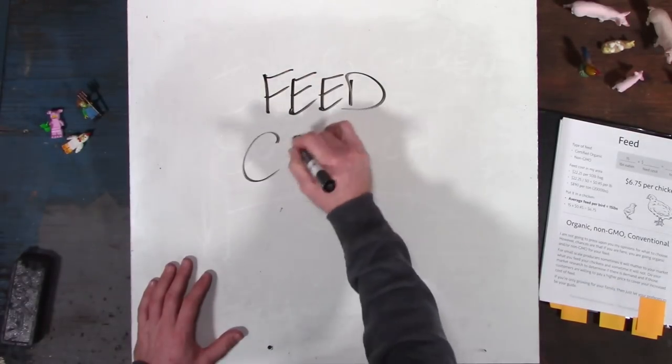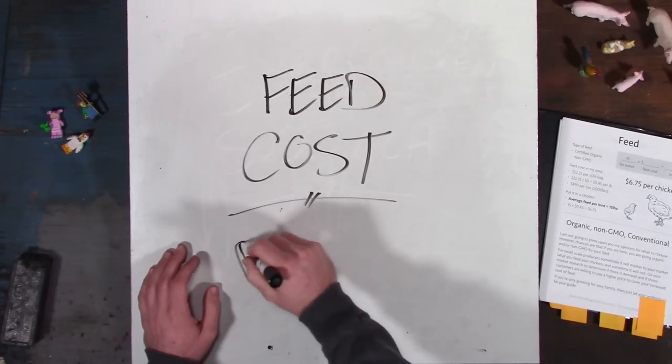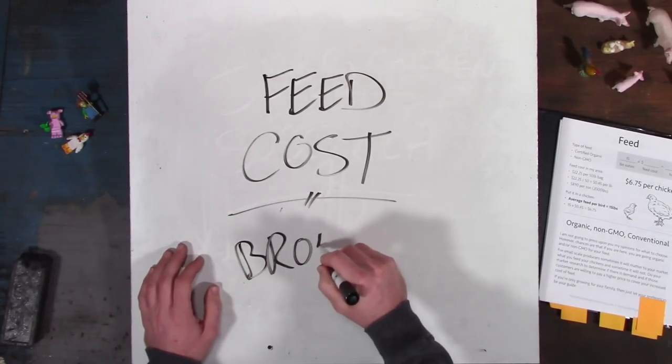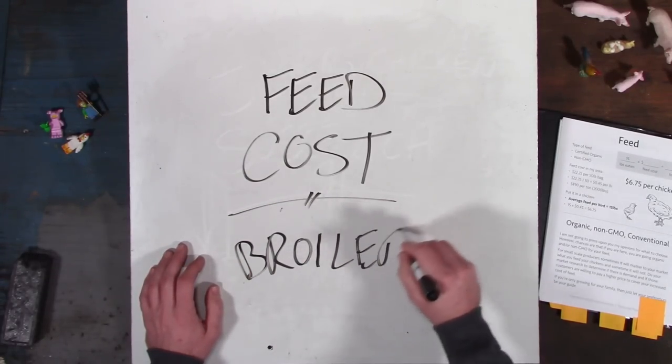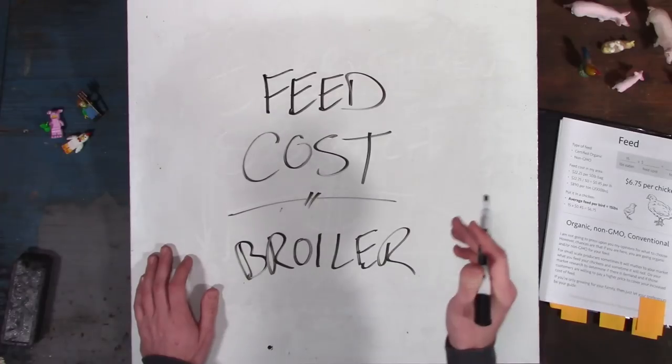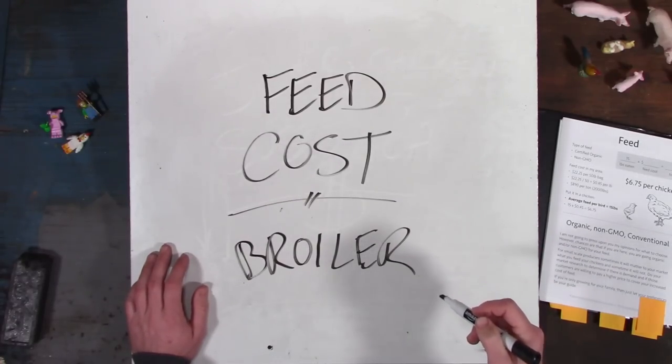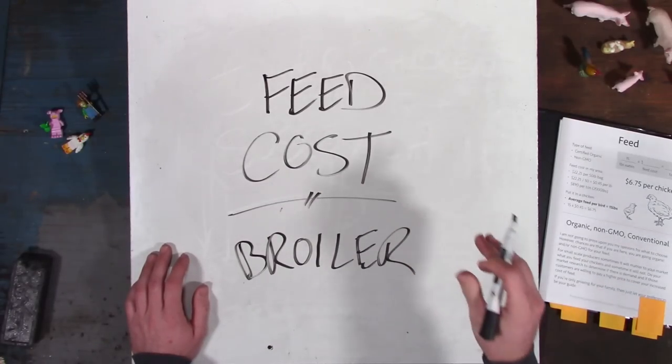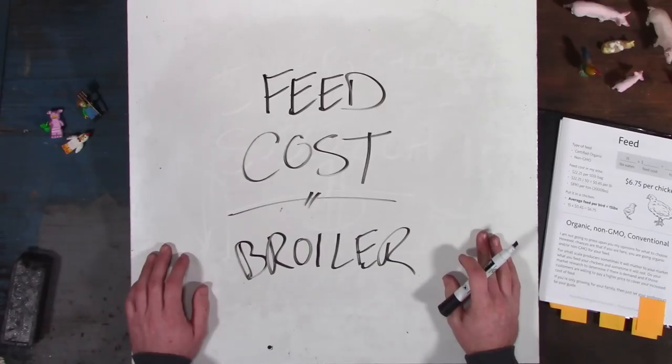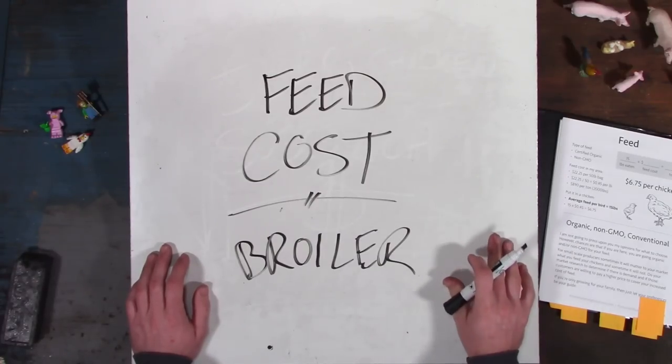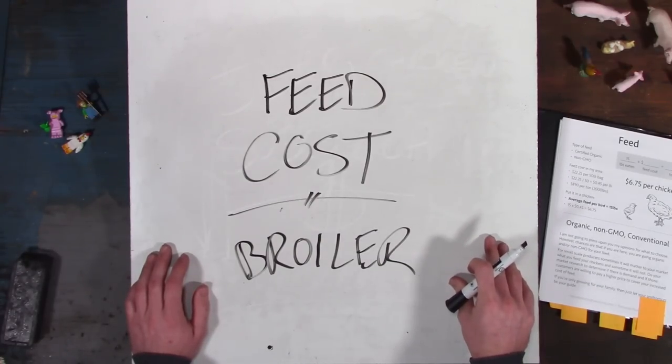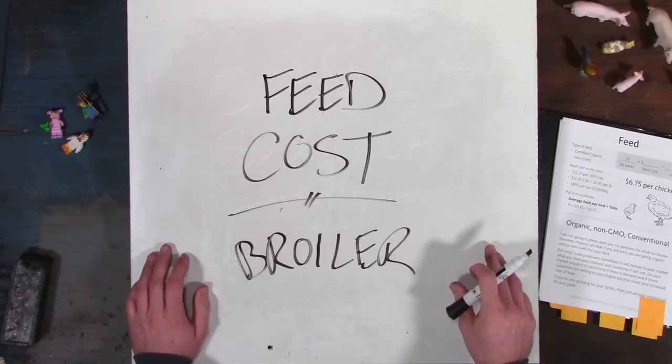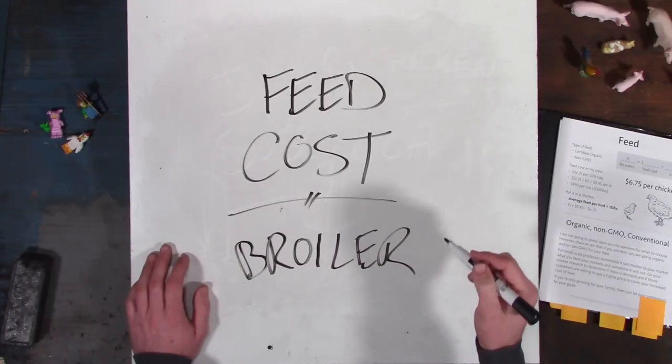Now today's video is going to be about the feed cost for broiler chickens. That's right, B-R-O-I-L-E-R because I can't spell and talk at the same time. We're going to go over the feed cost for broiler chickens because they do live on grass and they do eat grass, but that's only going to take up between 10 and 20% of their diet. The rest of that 90 to 80% of their diet is going to come from the feed that you give them.